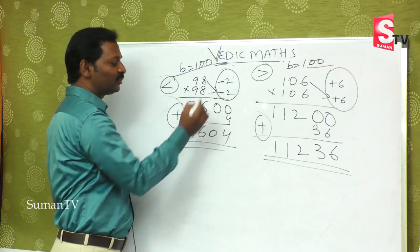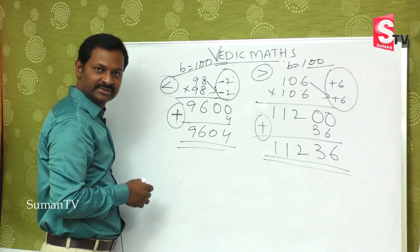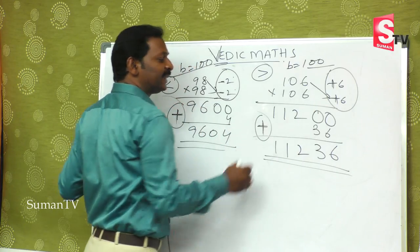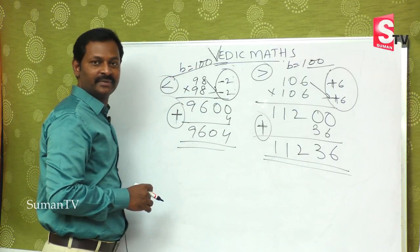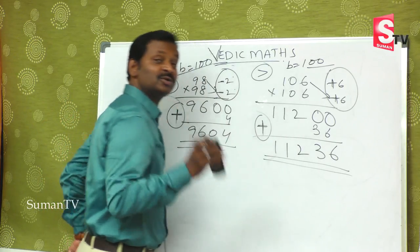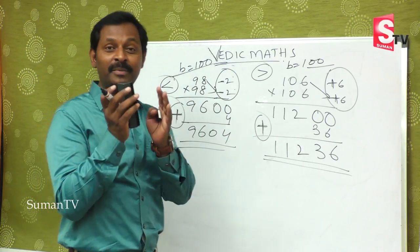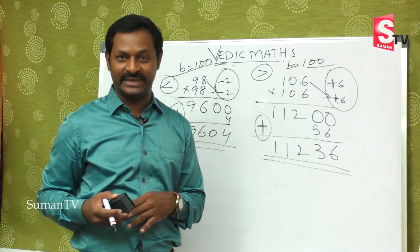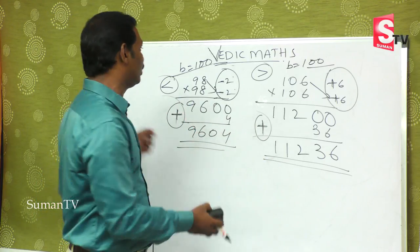That is why we have minus into minus gives plus, and plus into plus gives plus. This is from the previous class. Now we are going to see when we have one minus and one plus number.